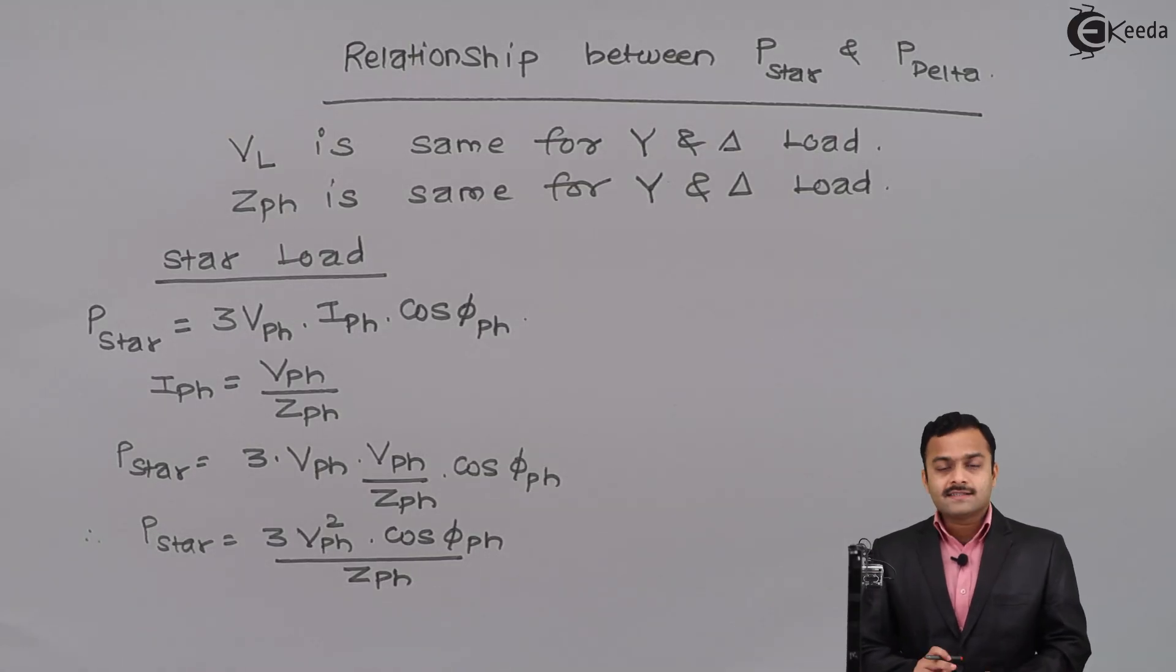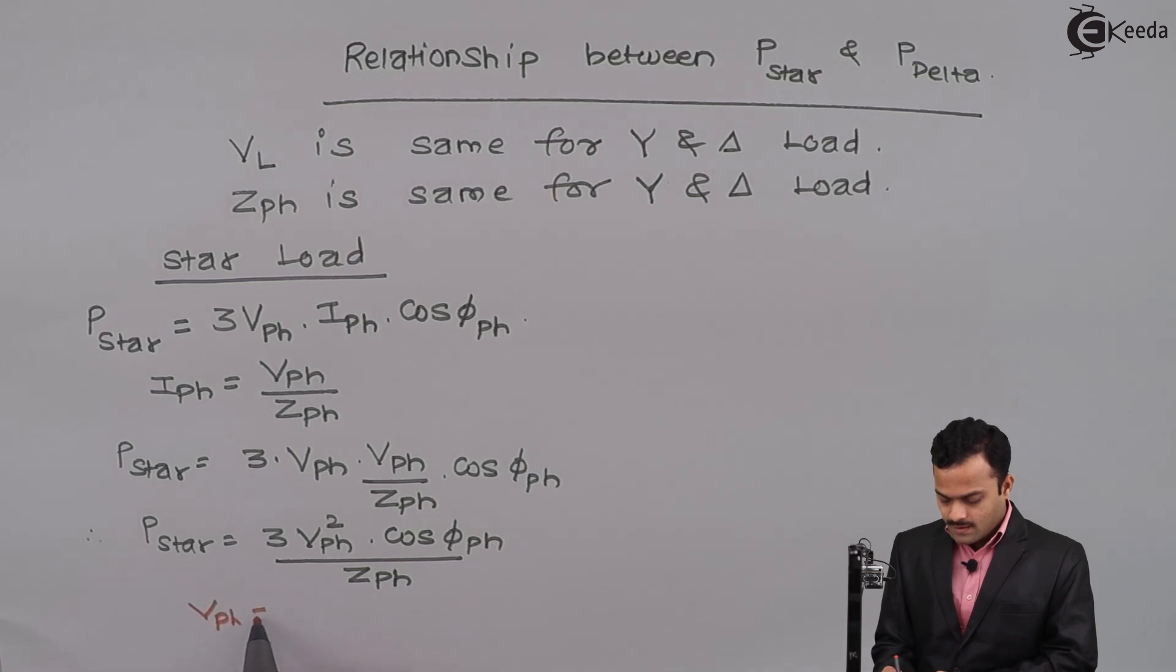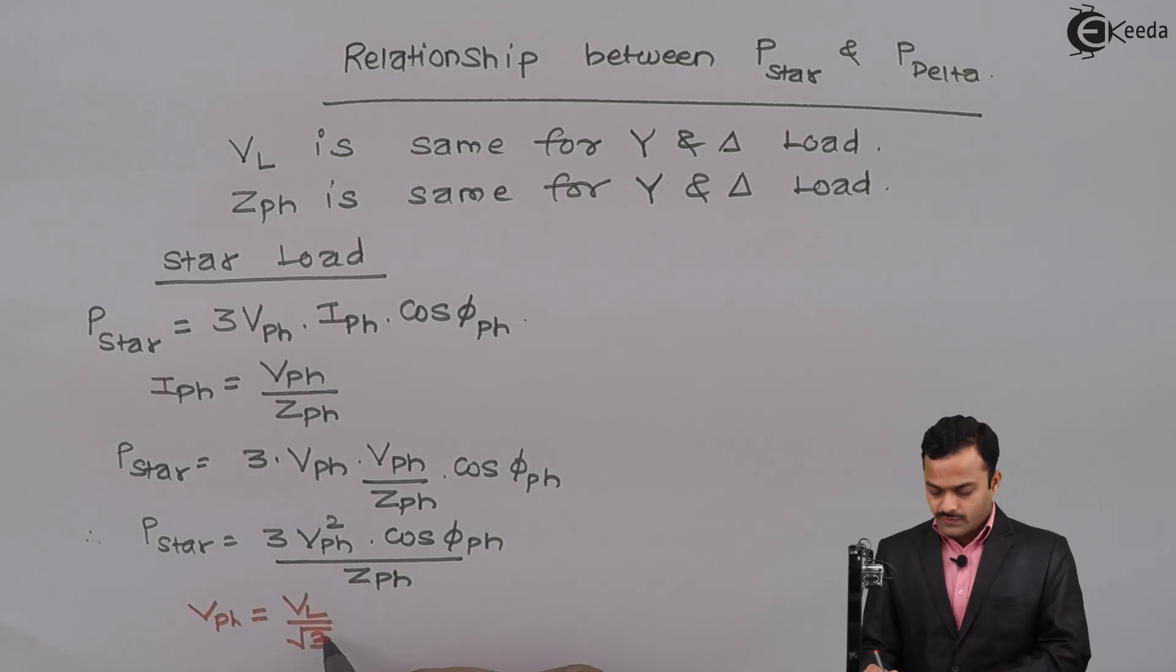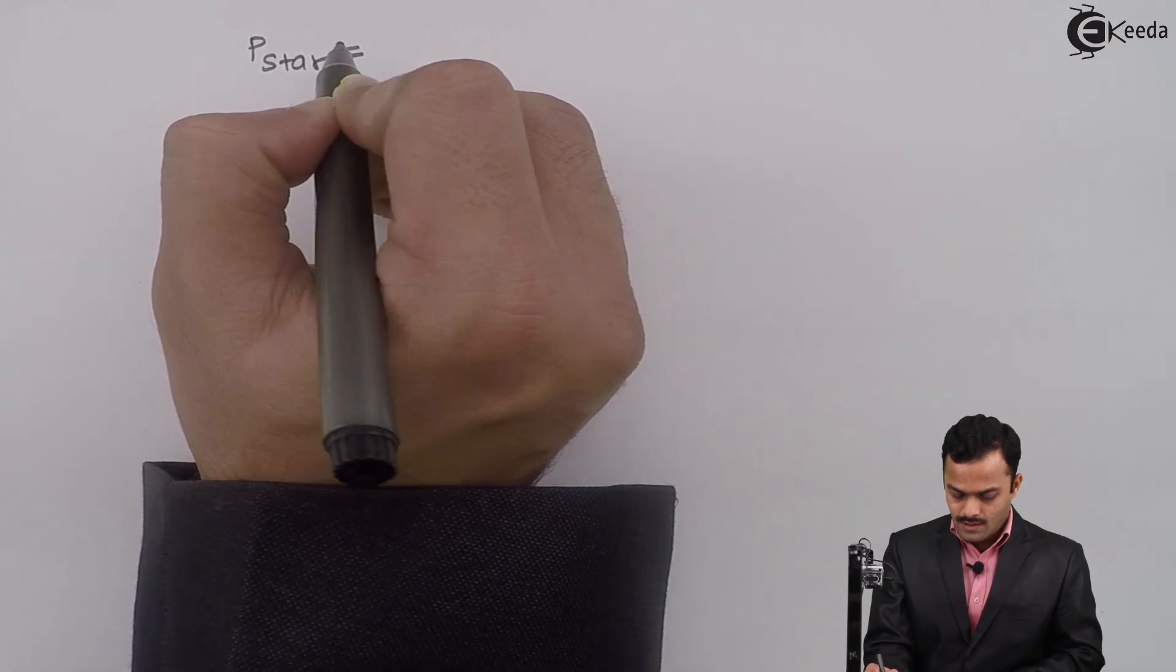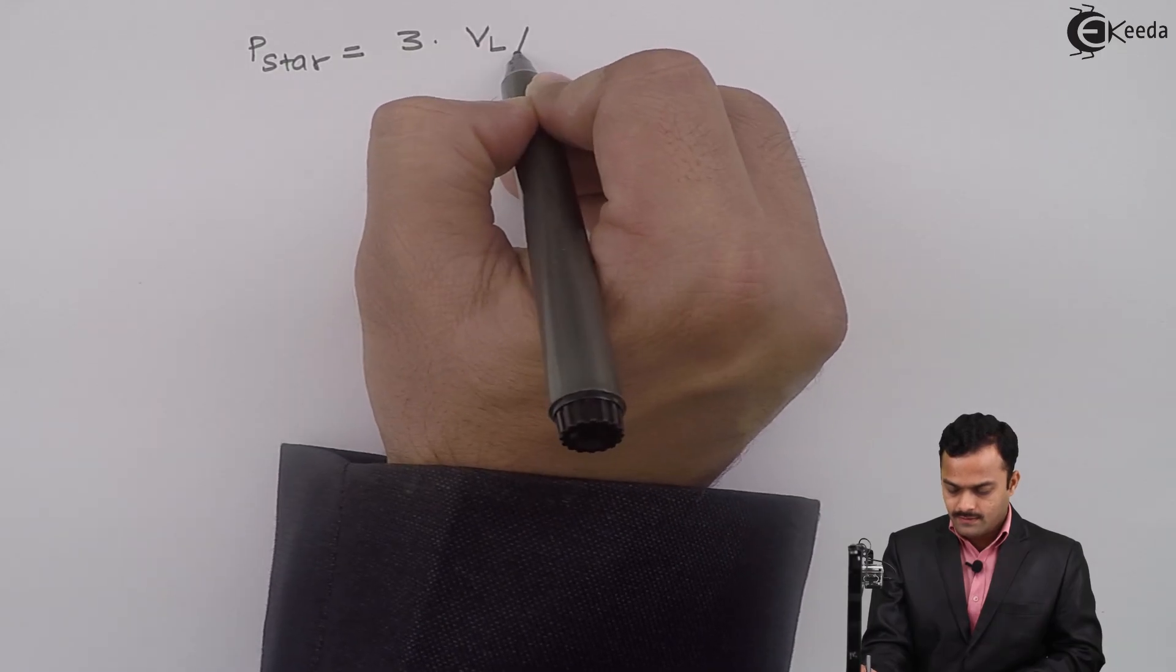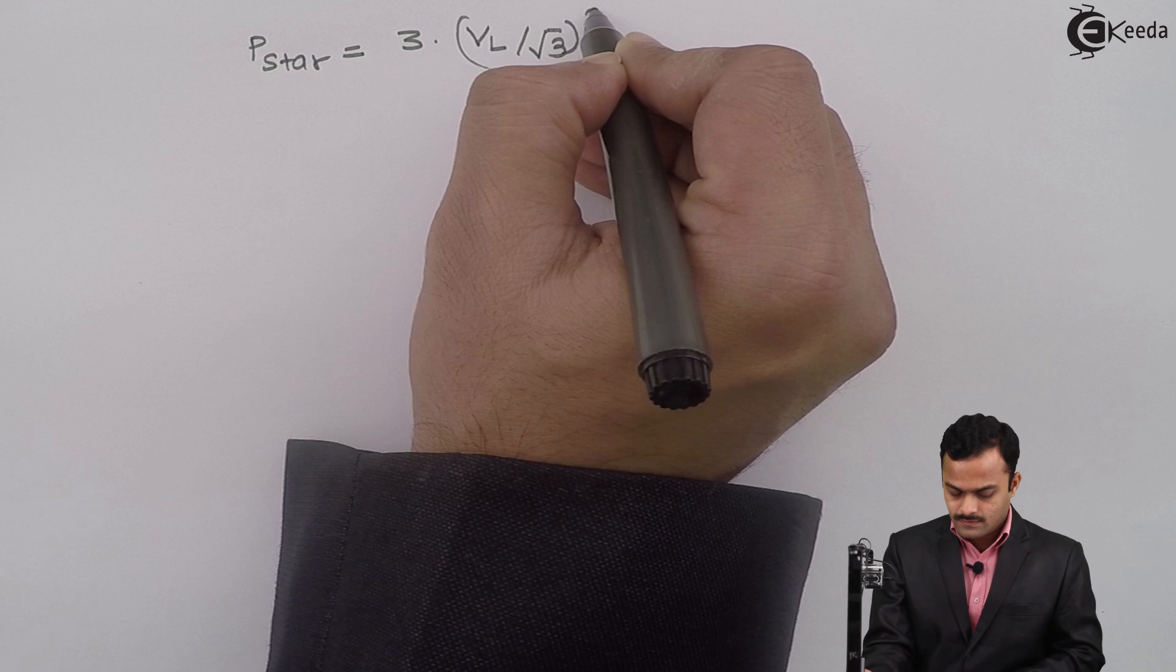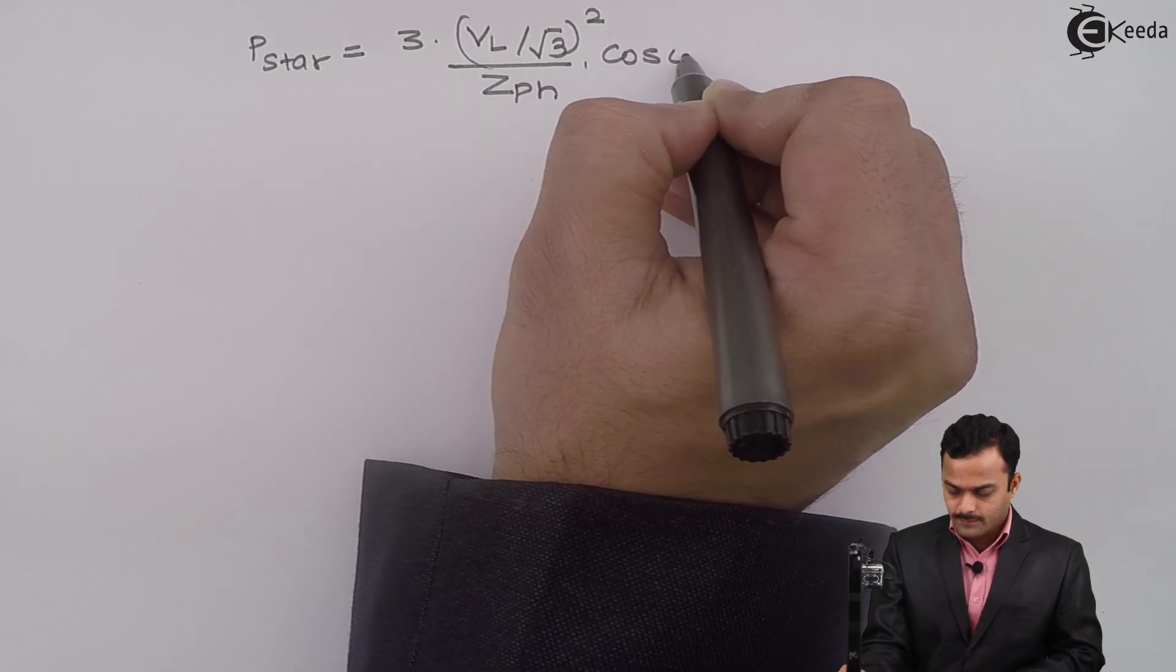Remember, it is a star connected load. Hence, phase voltage is nothing but line voltage divided by root 3. So let's substitute this value. What we will get? We will get P star as 3 VL upon root 3 square divided by ZPH multiplied by cos phi PH.